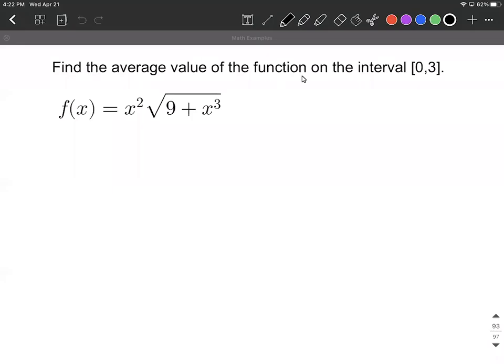This is an average value problem where we want to find the average value of the function on this given interval from 0 to 3, and here's our function: x squared times the square root of 9 plus x cubed.